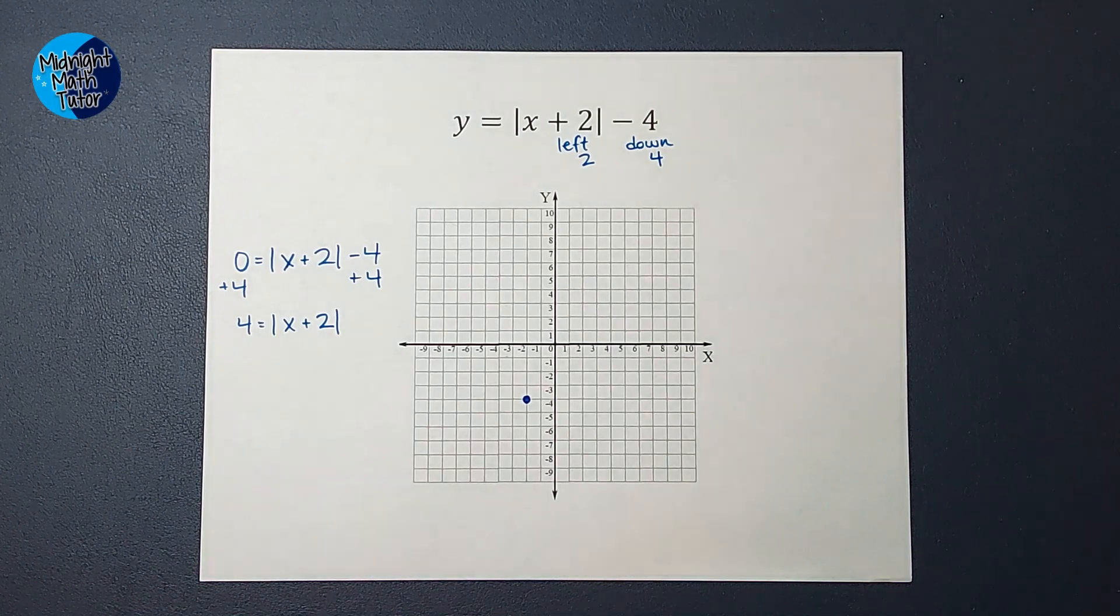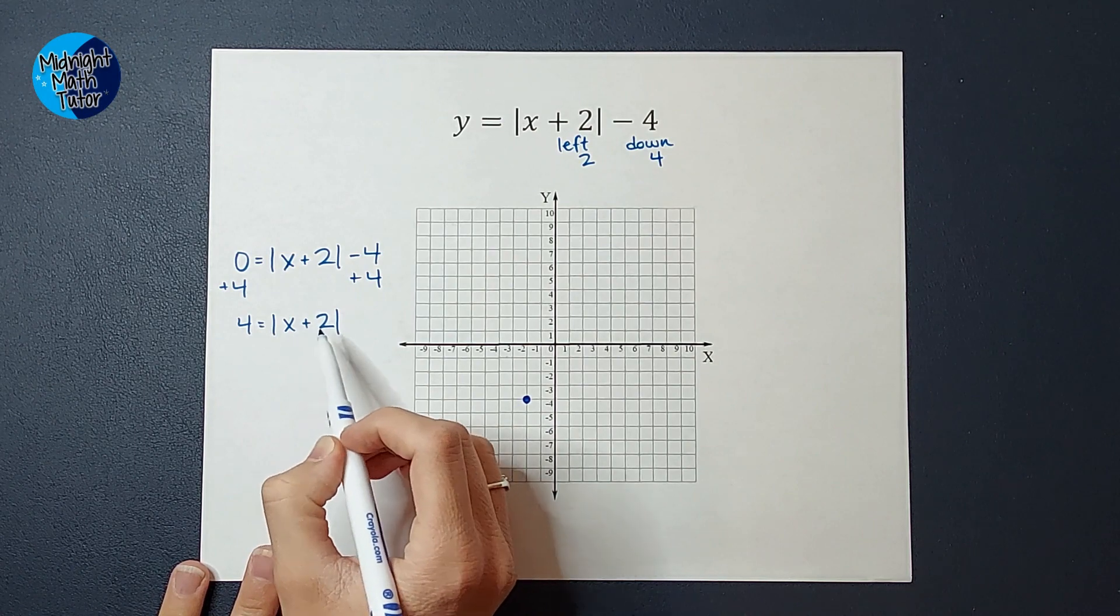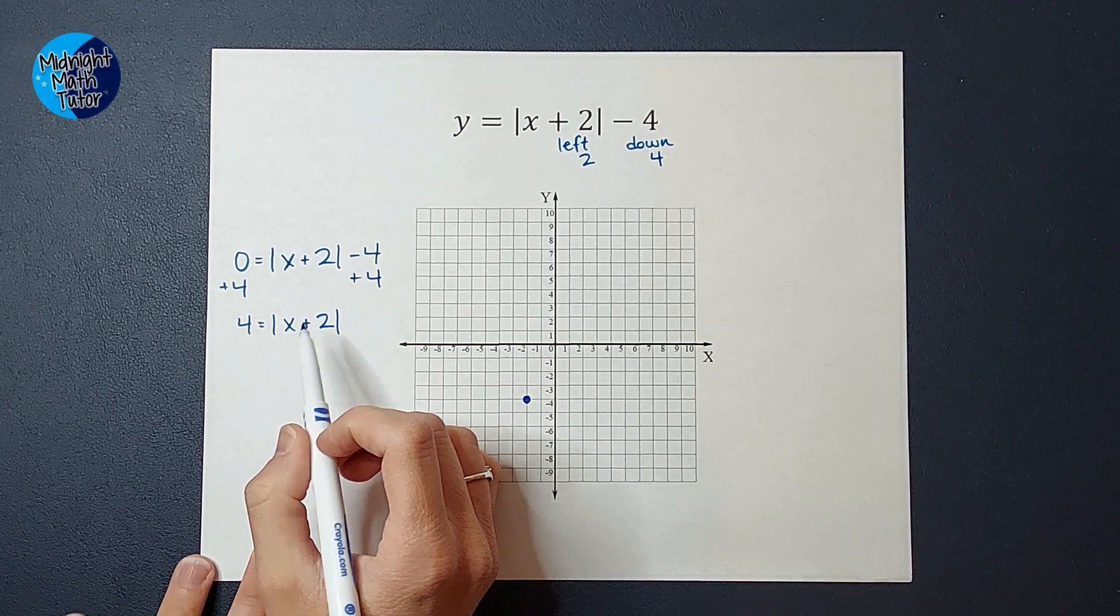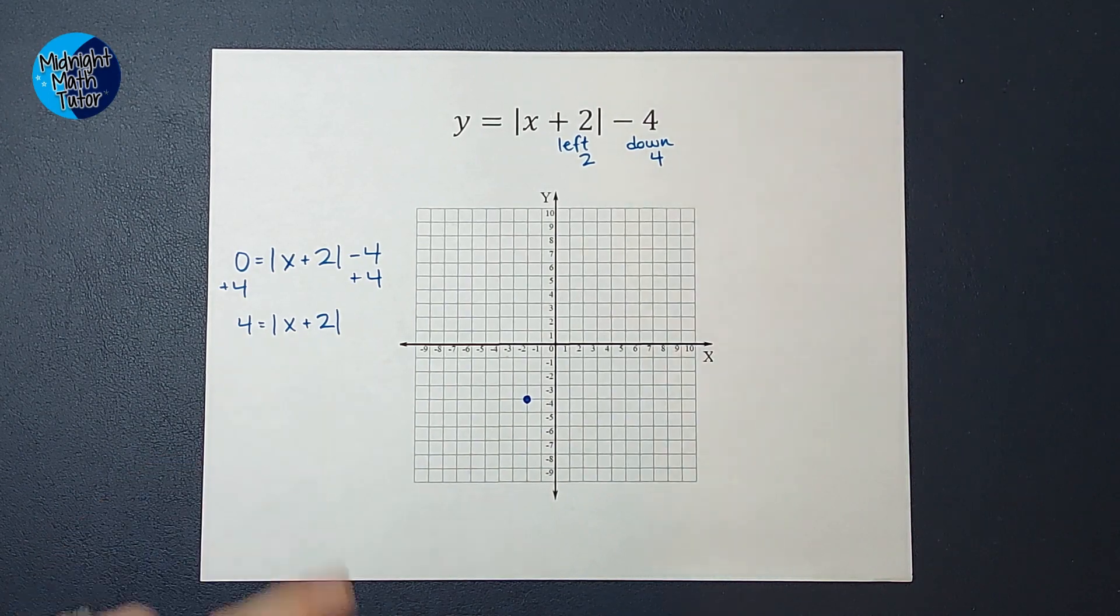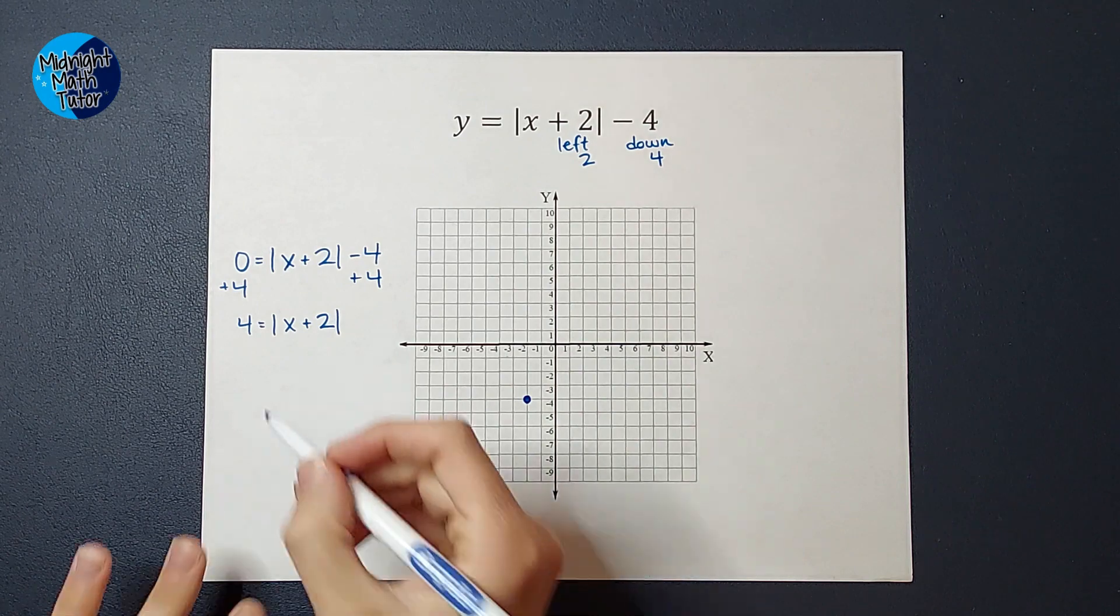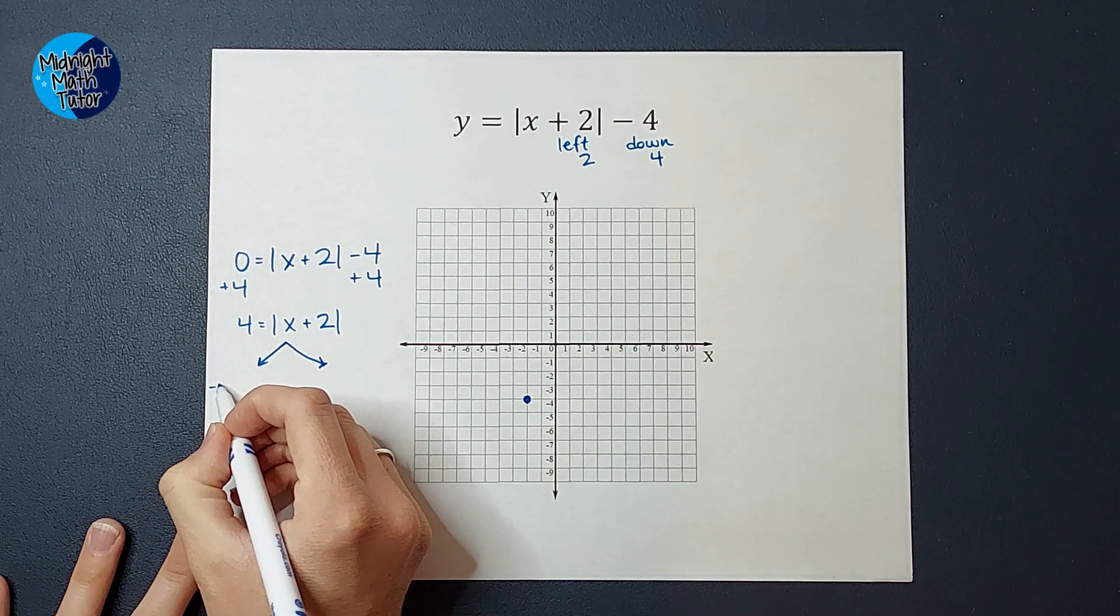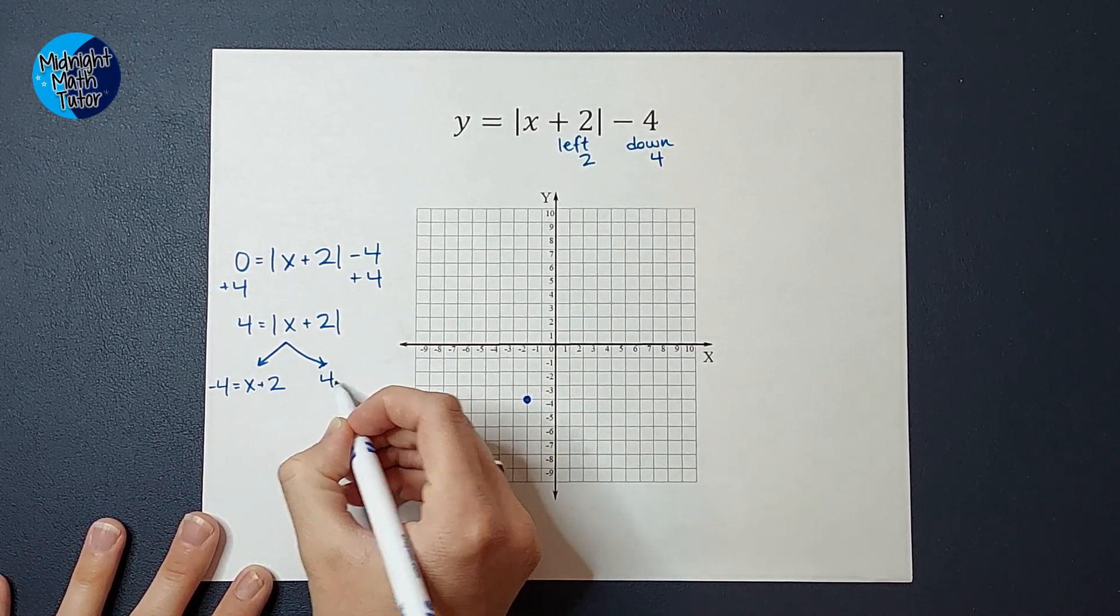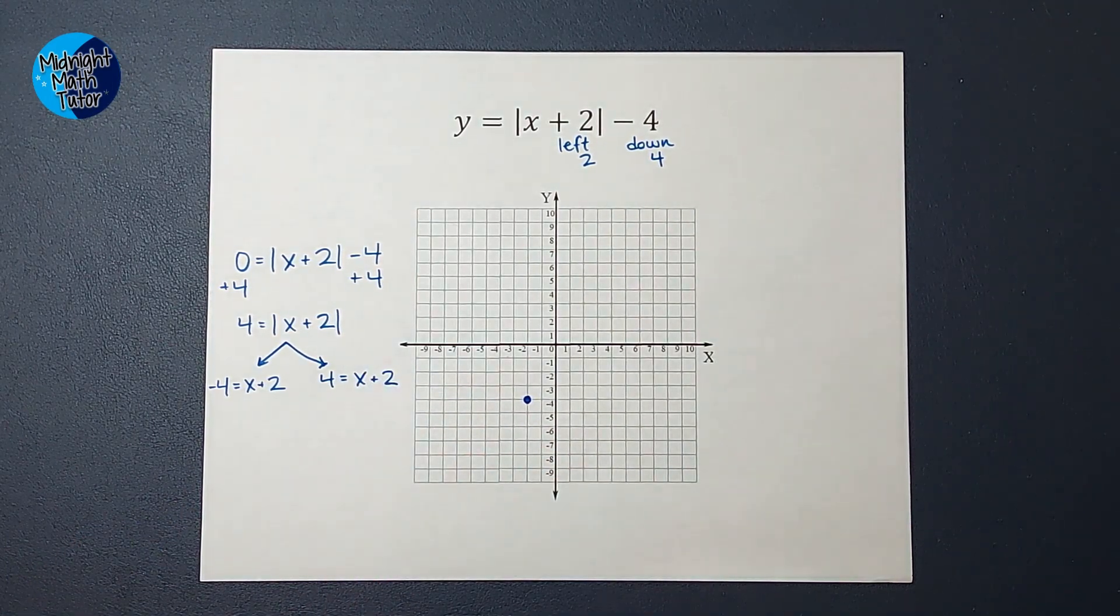So with that information in mind, this X plus two could be equal to four or X plus two could be equal to negative four. Because the absolute value of four is four and the absolute value of negative four is four. So what do I do here? I split these off and I say negative four could equal that X plus two and a positive four could equal that X plus two. Look how I'm getting two answers. Isn't this cool?